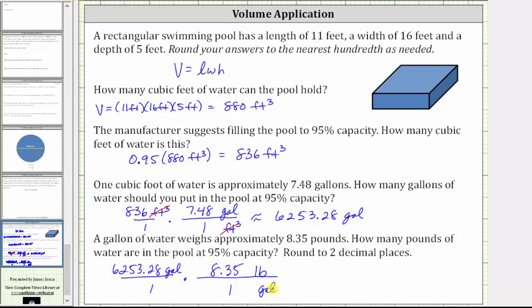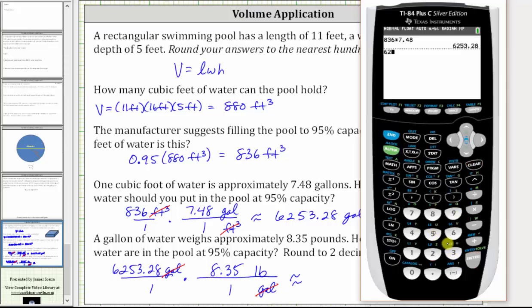We have gallons divided by gallons. Gallons simplify out, and now we're left with pounds. Going back to the calculator, we have 6,253.28 times 8.35, enter. Rounding to the hundredths place value, or two decimal places, we have approximately 52,214.89 pounds.